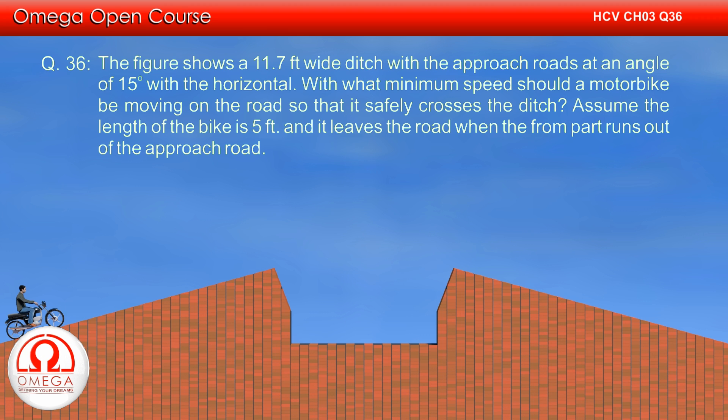The figure shows an 11.7 feet wide ditch with the approach roads at an angle of 15 degrees with the horizontal. With what minimum speed should a motorbike be moving on the road so that it safely crosses the ditch? Assume that the length of the bike is 5 feet and it leaves the road when the front part runs out of the approach road.